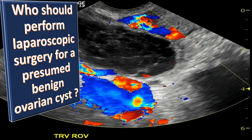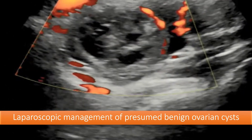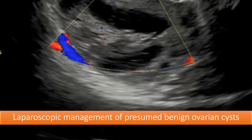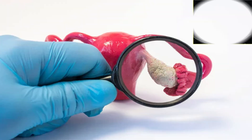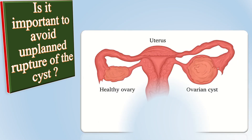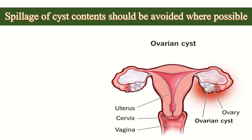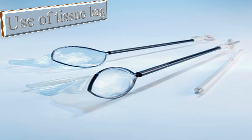Laparoscopic management of a presumed benign ovarian cyst should be undertaken by a surgeon with suitable expertise, experience, and appropriate equipment whenever local facilities permit. Aspiration of ovarian cysts, either vaginally or laparoscopically, is less effective and associated with a high rate of recurrence. Spillage of cyst contents should be avoided where possible, as preoperative and intraoperative assessment cannot absolutely preclude malignancy. Consideration should be given to use of a tissue bag to avoid peritoneal spill of cystic contents.